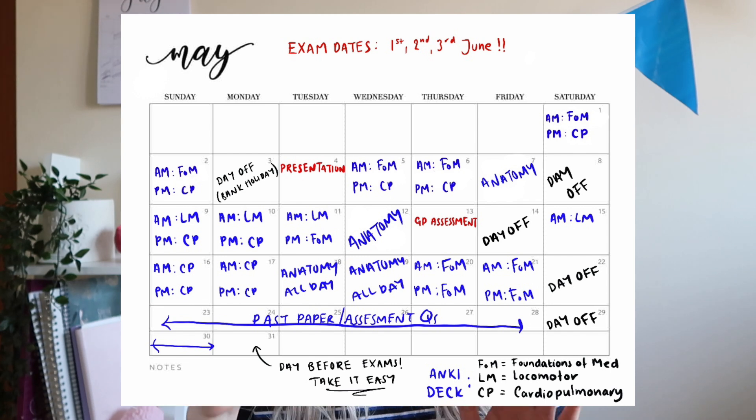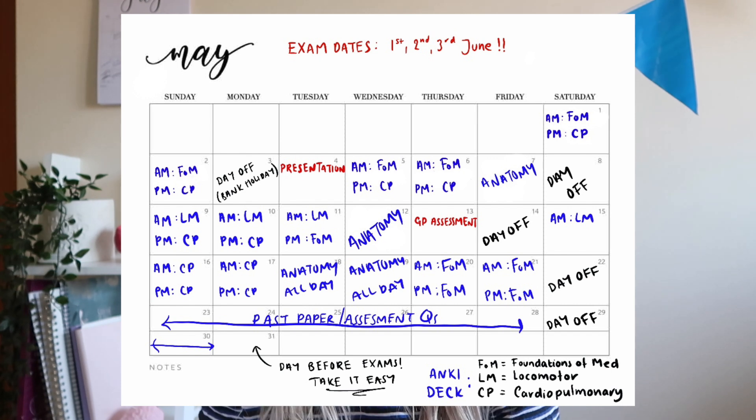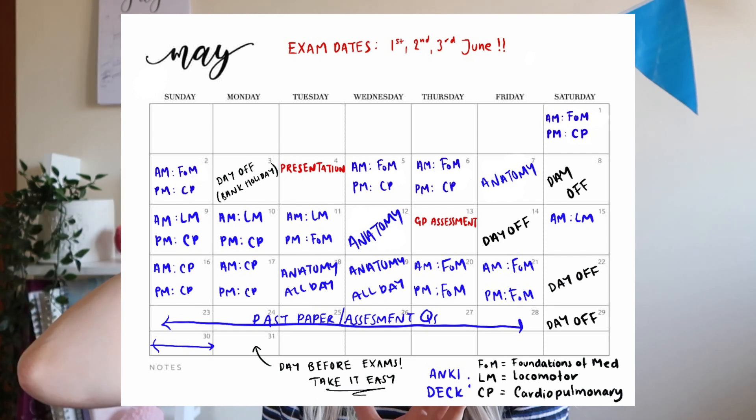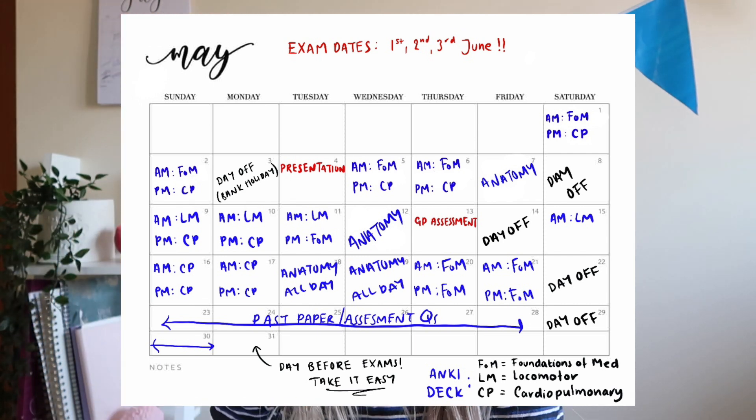Once I've got my learning objective list and made all my Anki flashcards, it's time to actually sit down and revise. Looking at my revision calendar, I honestly didn't stick to it exactly because sometimes topics take longer than expected and sometimes you just have an afternoon off — and that's okay. The plan was that the first couple of weeks would be going over flashcards in Anki and identifying weak topics, then closer to the exam I wanted to do past papers and practice questions. The bulk of my revision was from Anki and flashcards.